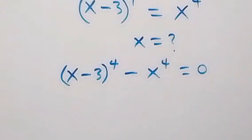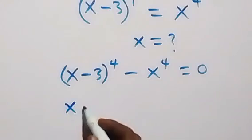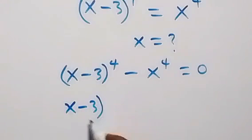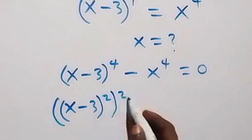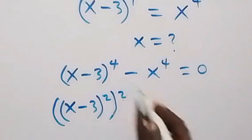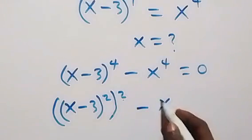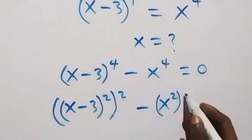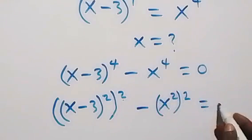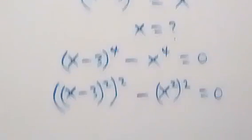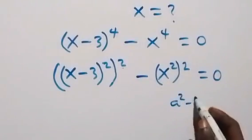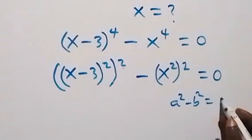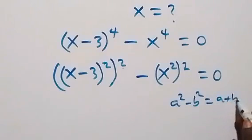Then we can write this as x minus 3, squared, then squared again — so this will still be raised to power 4 — then minus x squared, then squared, equals to 0. We have a squared minus b squared equals to a plus b, into bracket a minus b.